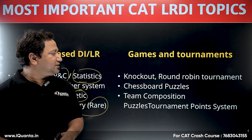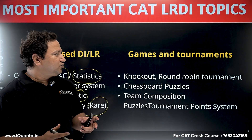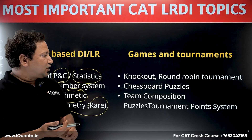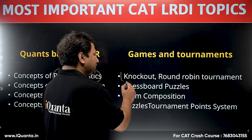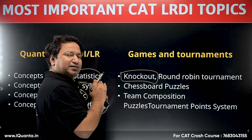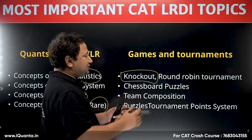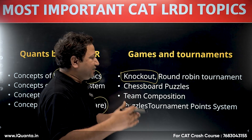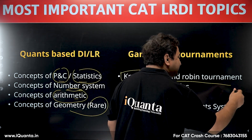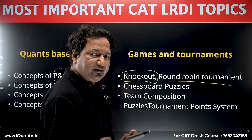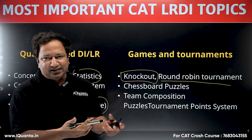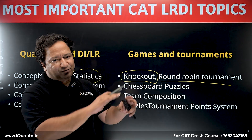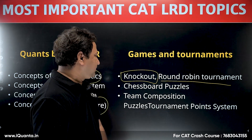Games and tournaments involve two main formats: round robin and knockout. In knockout, with 16 teams, two teams play and the loser is eliminated. In round robin, every team plays against every other team. Points can vary — for example, plus two for a win, one for a draw, and zero for a loss — and you must create a complete table and answer questions.